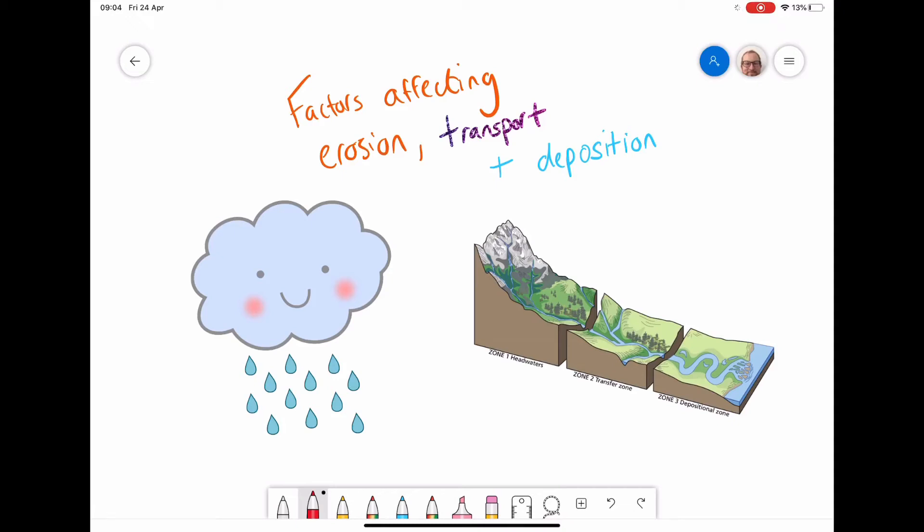Last lesson we looked at the different types of erosion. Now we're going to look at what factors affect the rate of erosion and transport and deposition in a river's course.